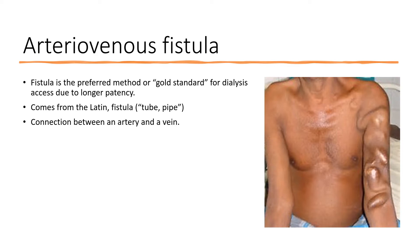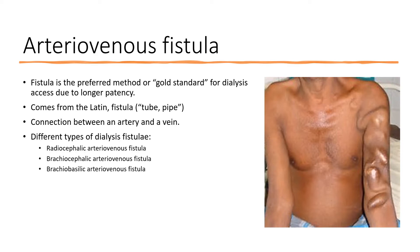Arteries are high-pressure blood vessels; when you measure blood pressure in your arm you are measuring arterial pressure. Veins are low-pressure vessels. When you attach a high-pressure artery to a low-pressure vein, the pressure causes the vein to enlarge over two to three months until it is large enough to insert a needle for dialysis. There are three types of dialysis fistula: radiocephalic, brachiocephalic, and brachial basilic AV fistula.